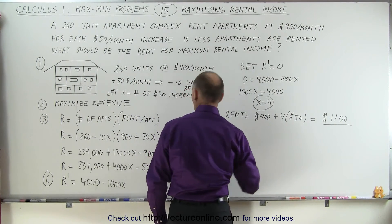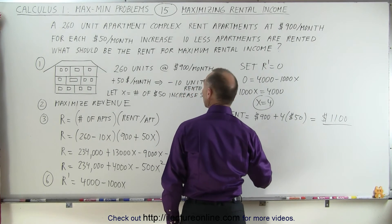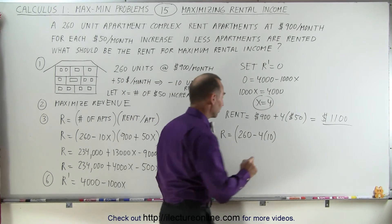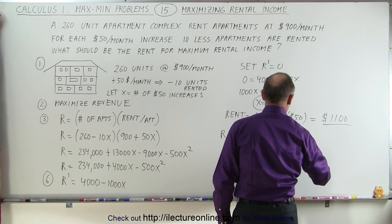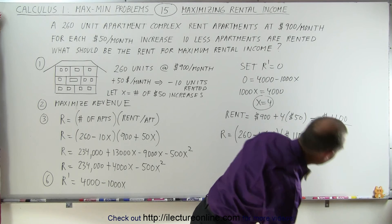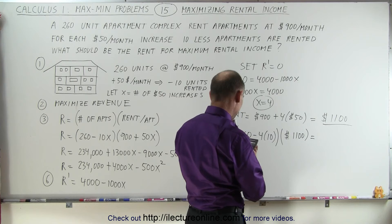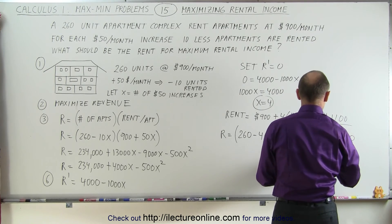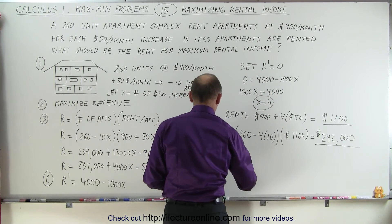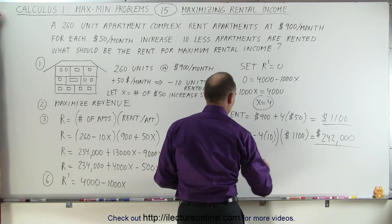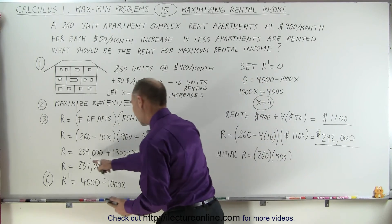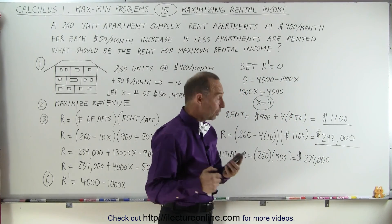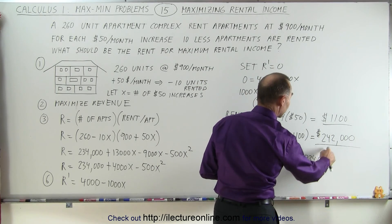To verify: the number of apartments rented is 260 − 4×10 = 220 apartments, meaning 40 vacancies. Revenue = 220 × $1,100 = $242,000 in gross revenue. The original revenue was 260 × $900 = $234,000. So by increasing rent by $200, rental income rises from $234,000 to $242,000.